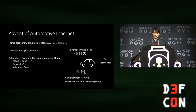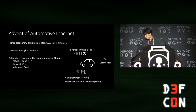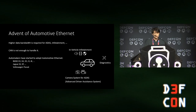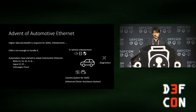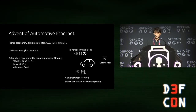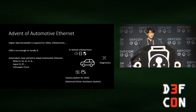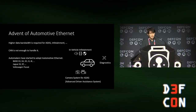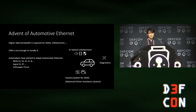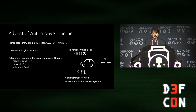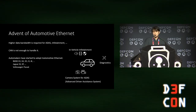Let's talk about the advent of automotive Ethernet. Recent vehicles are becoming more complex than smartphones, requiring higher data bandwidth for various functions such as ADAS and infotainment systems. CAN is not enough to handle it, so automakers have started to adopt automotive Ethernet. After BMW released their cars with automotive Ethernet, many other automakers followed.